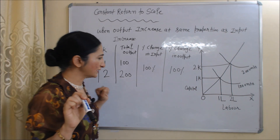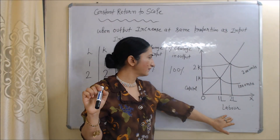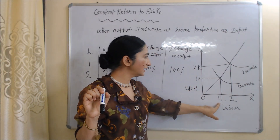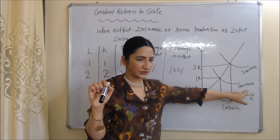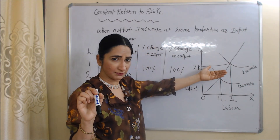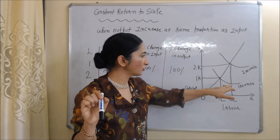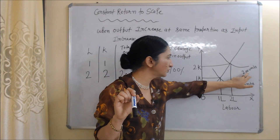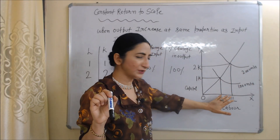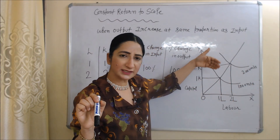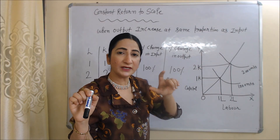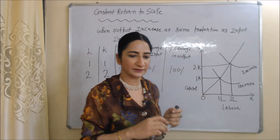The same thing is shown in the diagram. On the x-axis we have labor and on the y-axis we have capital. One capital and one labor gives 100 units of production. When we increase both labor and capital from one to two, output increases from 100 to 200 units. Percentage increase in input is 100% and percentage increase in output is also 100%, so this is called constant returns to scale.